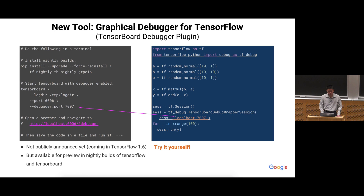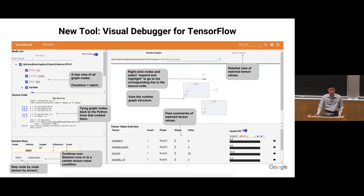The TF debugger is a command line tool — nice, low footprint, usable via a terminal. But it would be even nicer to debug TensorFlow models in a graphical user interface. There's an upcoming feature called the TensorBoard debugger plugin, or visual graphical debugger for TensorFlow. It's not included in TensorFlow 1.5 but is coming in release 1.6 and is available for preview in nightly builds. All the code in the slides is copy-paste executable, so you can install the nightly builds and try it out.